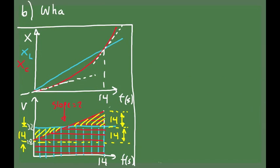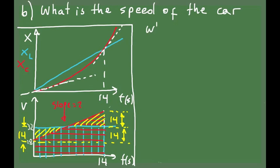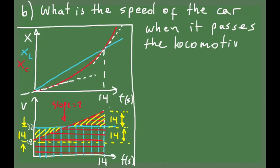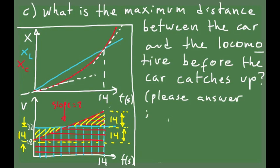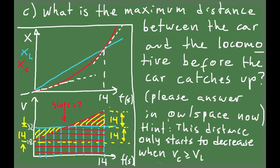Knowing this, I would like you to answer: what is the final velocity of the car at the moment when it just caught up with the train? Think about this question, pause the video, and go to Allspace to answer the question in the video quiz. The last question is: what is the maximum distance between the car and the train before the car has caught up? As a hint, note that this distance only starts to decrease when the velocity of the car is greater than or equal to the velocity of the train.